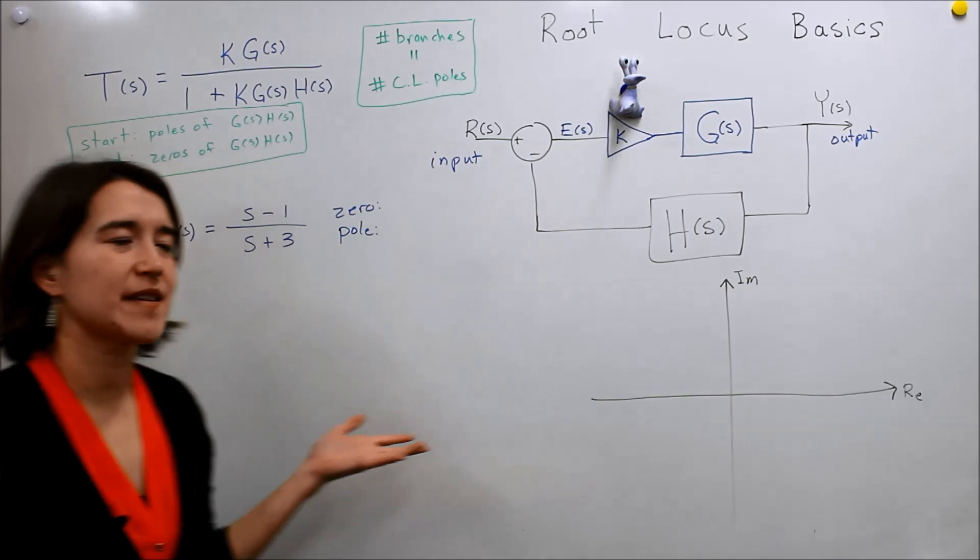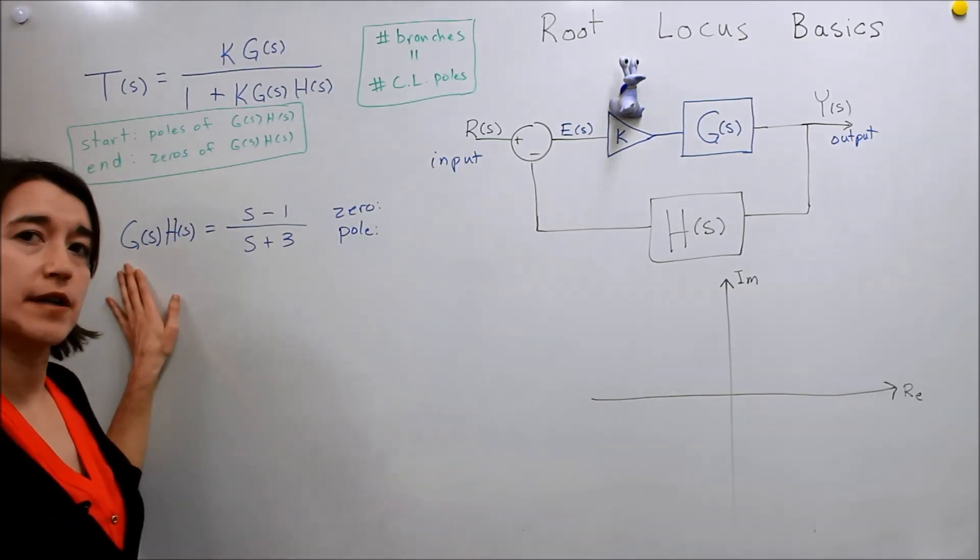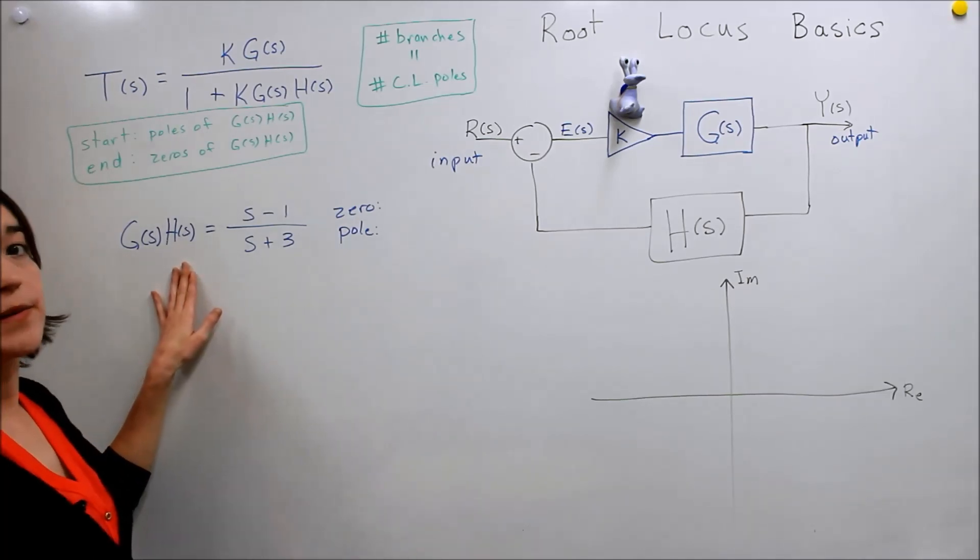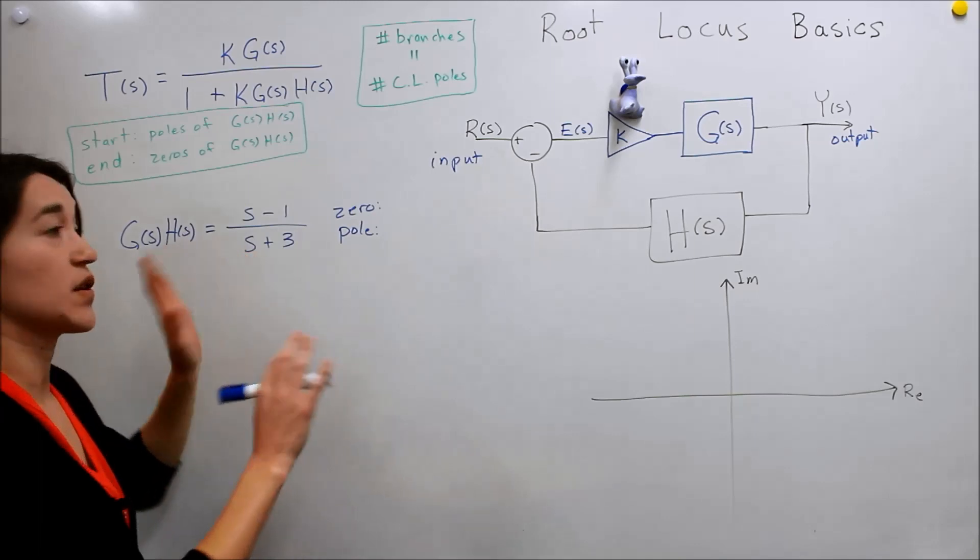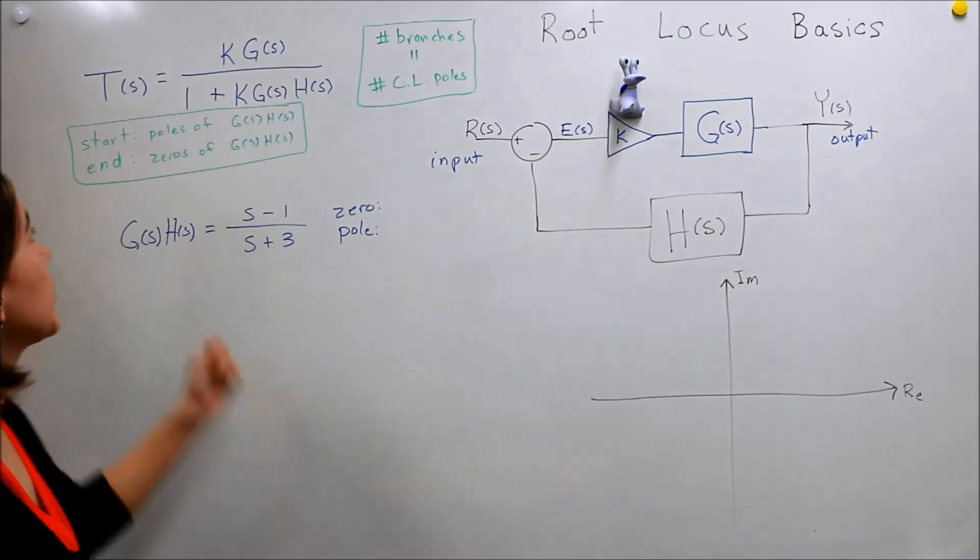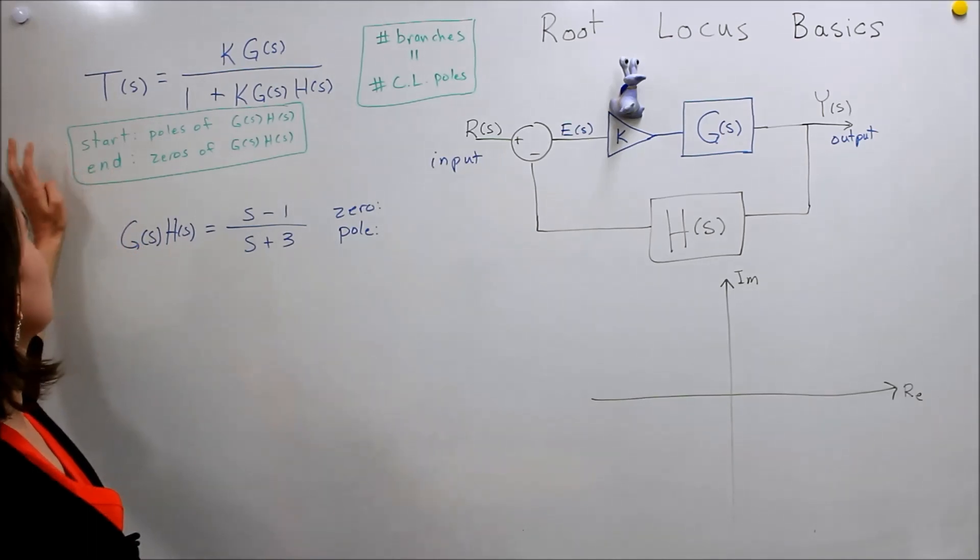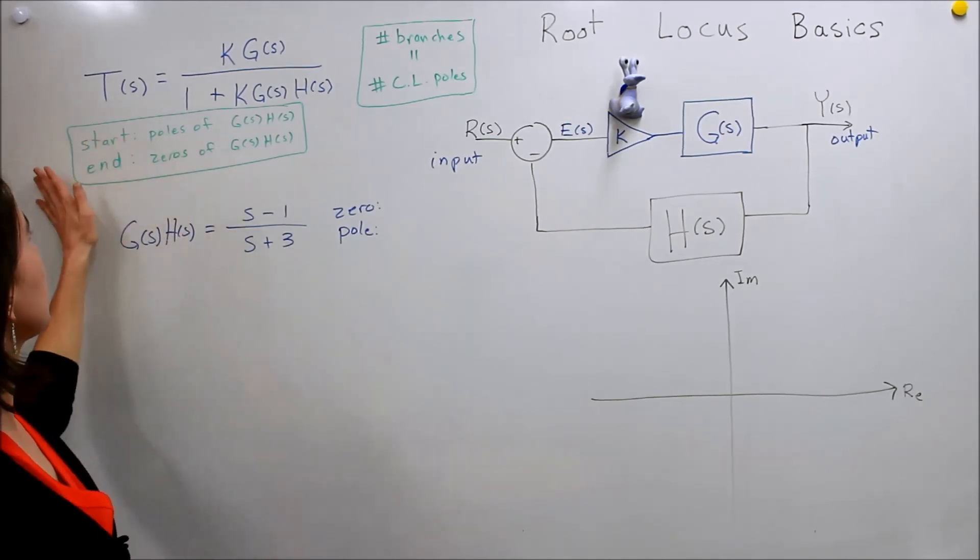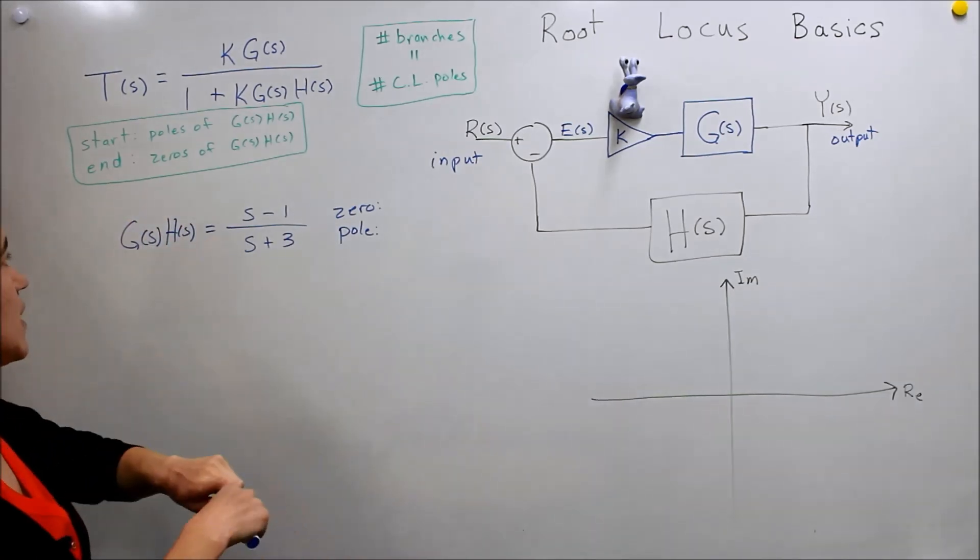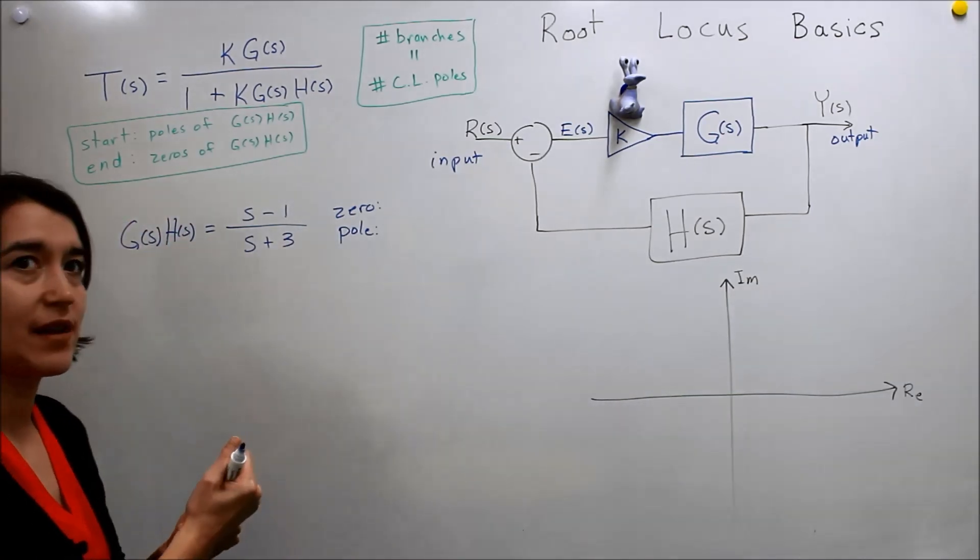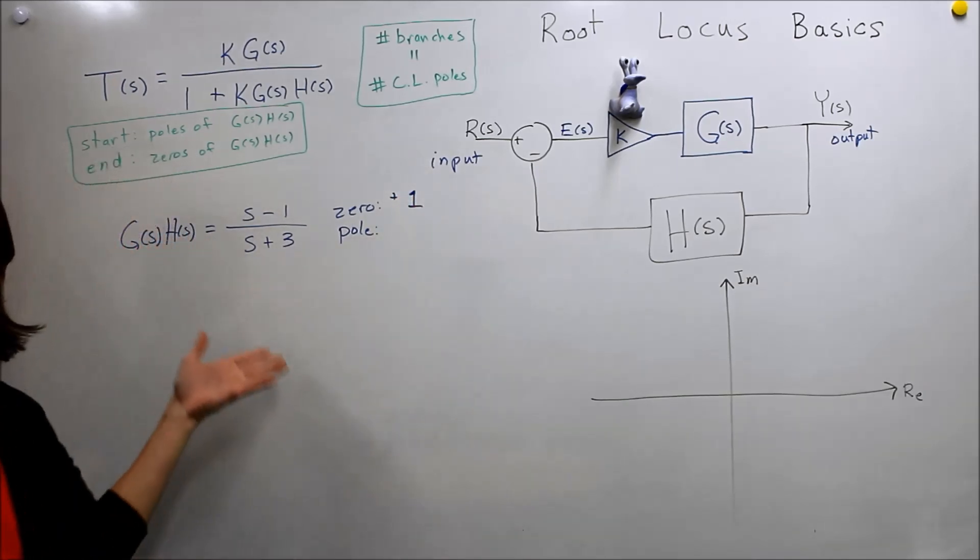Now let's take an example, so let's do a very simple example. This is the equation for G times H here, just S minus one divided by S plus three. First thing we need to do, remember, we need to find our starting point and our end point. So to do that, we look for the poles and zeros of our G times H expression. So here it is, our zero, we can see easily, is one, positive one, and our pole is at negative three.